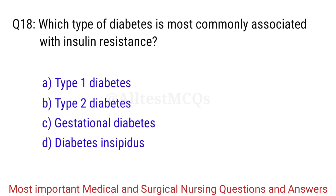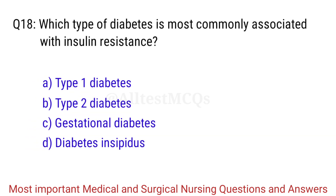Q18. Which type of diabetes is most commonly associated with insulin resistance? The right answer is Option B: Type II diabetes.